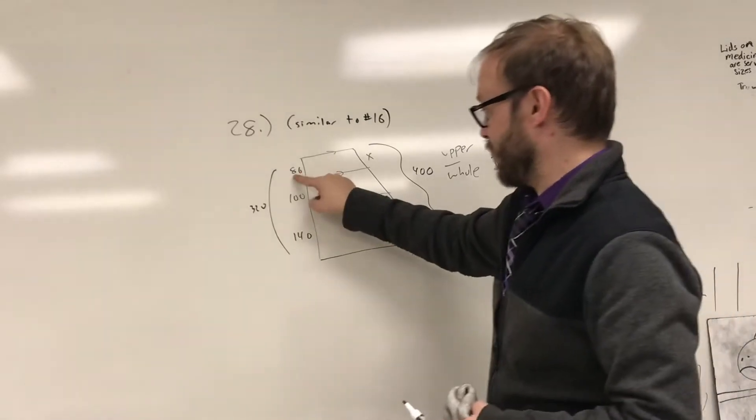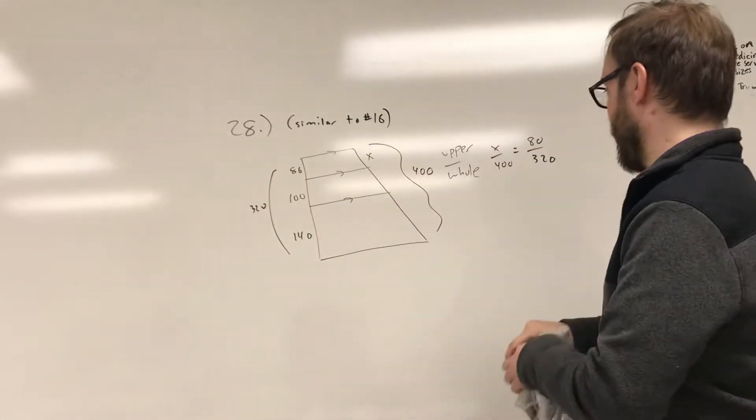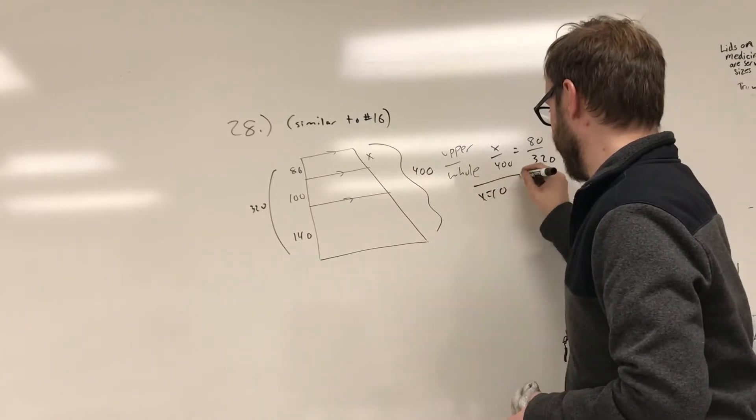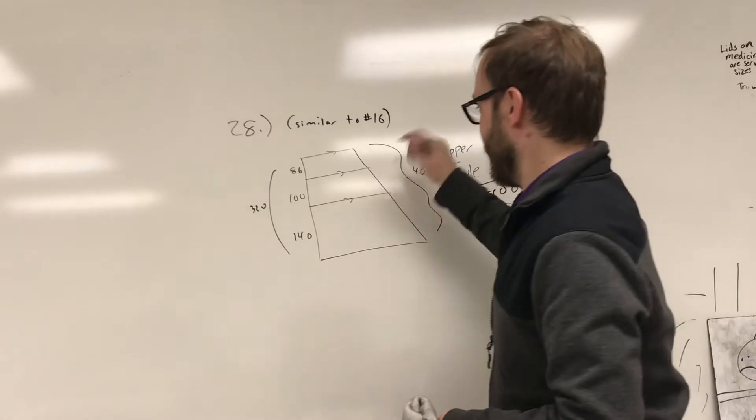By the way, notice that's a fourth of the whole length. So this will be a fourth of the whole length. That's going to make x 100, or you can solve that proportion there, and you find out that x was equal to 100. So now we've got 100 there.